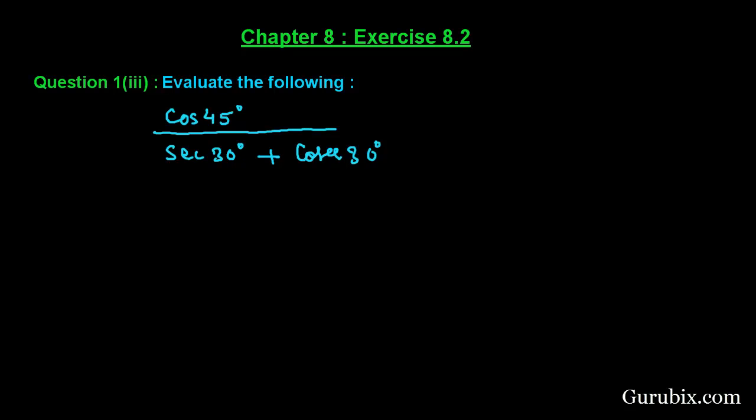Welcome friends, let us solve the third part of question number 1 of exercise 8.2 of chapter 8. We have to evaluate cos 45° divided by sec 30° plus cosec 30°.